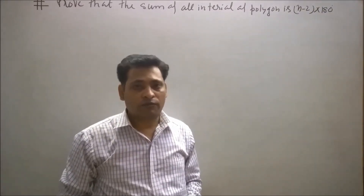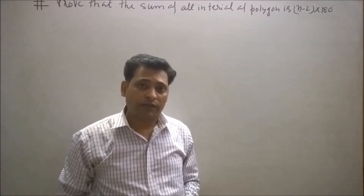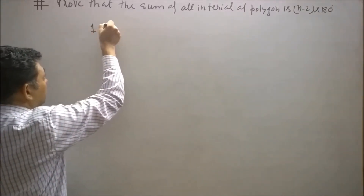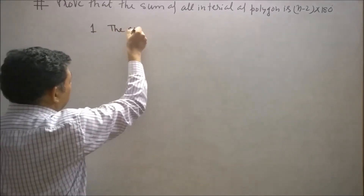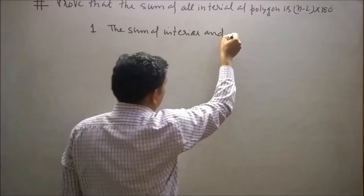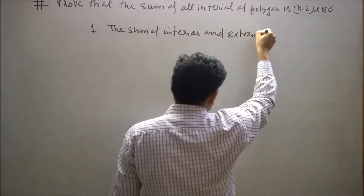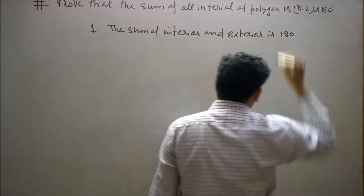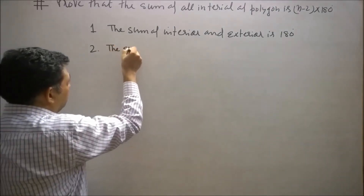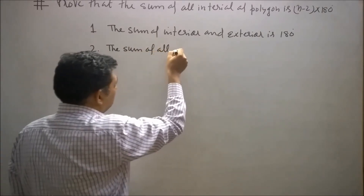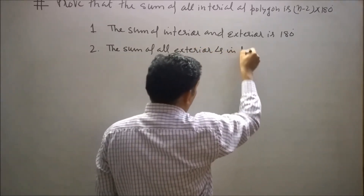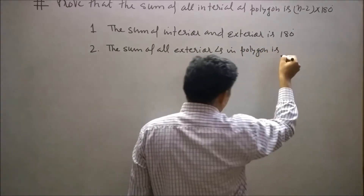We can easily prove that the sum of all interior angles of a polygon is (n-2) × 180 by using two facts. Number one: the sum of an interior angle and its exterior angle is 180 degrees. Number two: the sum of all exterior angles is 360 degrees.